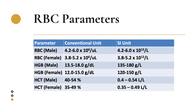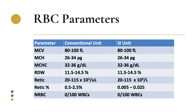Hematocrit levels for males are 40 to 54%, and for females 35 to 49%. In SI units, 0.4 to 0.54 liter per liter for males and 0.35 to 0.49 liter per liter for females. MCV, or mean cell volume, has conventional and SI units of 80 to 100 femtoliters. MCH, or mean cell hemoglobin, has a reference value of 26 to 34 picograms. MCHC, or mean cell hemoglobin concentration, is 32 to 36 grams per deciliter. RDW, or red cell distribution width, is 11.5 to 14.5%. The reticulocyte count is 20 to 115 times 10 to the 3rd cells per microliter, or 0.5 to 2.5% in conventional units.